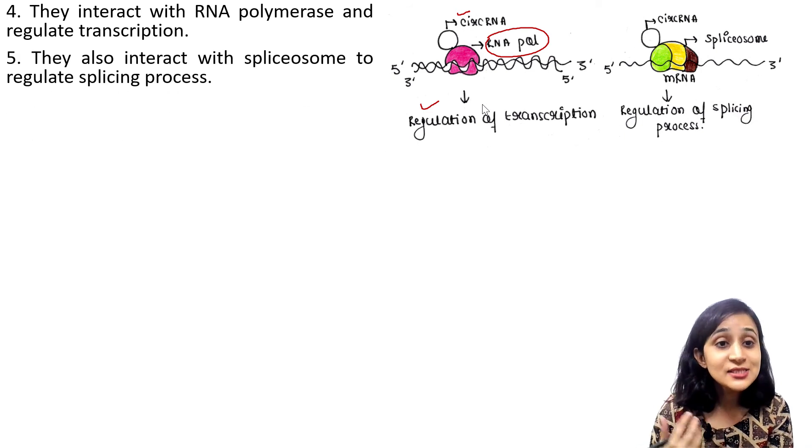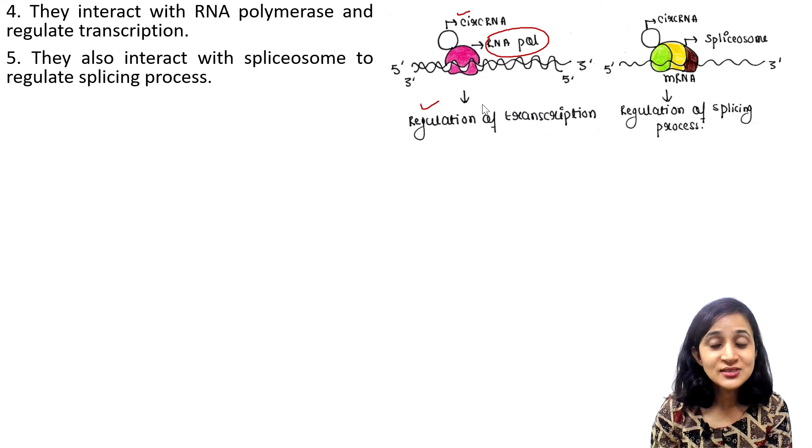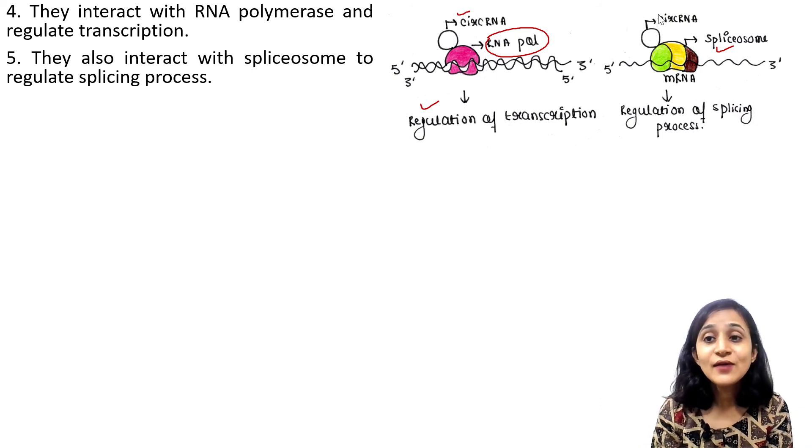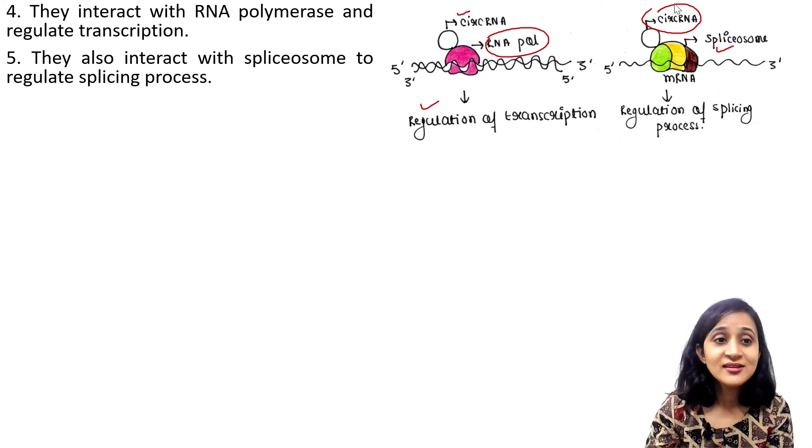They also interact with spliceosome to regulate the splicing process. So here we can see this is the spliceosome and it is regulating splicing. And in this case, the circular RNA is attached with this spliceosome and it is regulating the splicing process further.